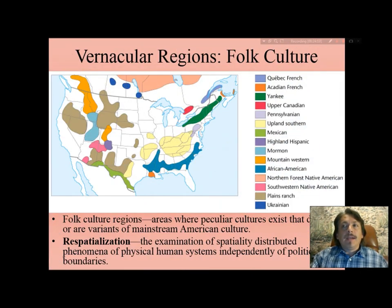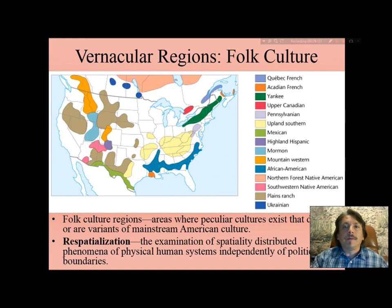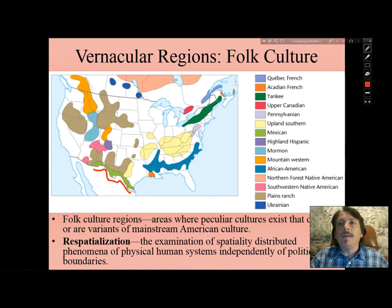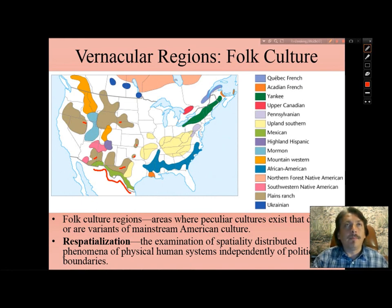In this map of the United States and Canada, we have a selection of vernacular regions identifying different folk cultures without the core/domain/sphere scheme. Along the border of Texas, New Mexico, and Arizona, there is a strongly Mexican culture shown in green. Areas in brown are associated with Plains Ranch culture. Areas in magenta — especially here — are strongly American Indian in culture, particularly the Pima and Papago, also known as the Tohono O'odham, and a larger area of Navajo, Hopi, and Utah Indians.